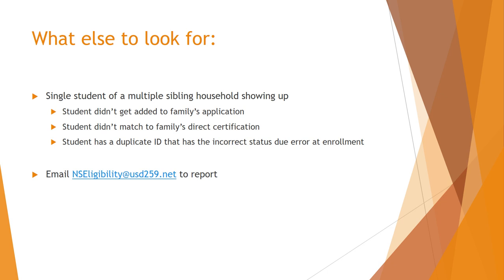If you suspect there is a problem with a student's status based on this report, please report this issue to nseligibility@usd259.net to be investigated. Nutrition Services relies on parents and you, the one-source operator, to identify these problems since we are not familiar with the students who could be related or might be living in the same household.